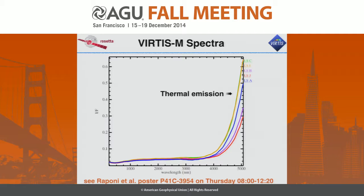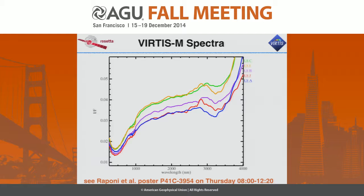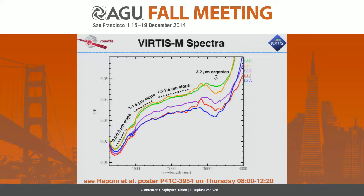Looking at the full spectrum of the five landing sites, the typical 67P/Churyumov-Gerasimenko nucleus spectra are characterized in the visible by a reddening below one micron, then a much lower reddening between 1 and 2.5 micron, and then strong thermal emission from about 3.5 to 5 micron. Zooming into the reflectance portion, you can appreciate the variability of the slope in the visible range between 0.5 and 0.8 micron, and at around 1 micron up to 2.5 micron. These are the three spectral indicators used to evaluate the colors of the nucleus, along with the band depth of the organic feature at 3.2 microns.